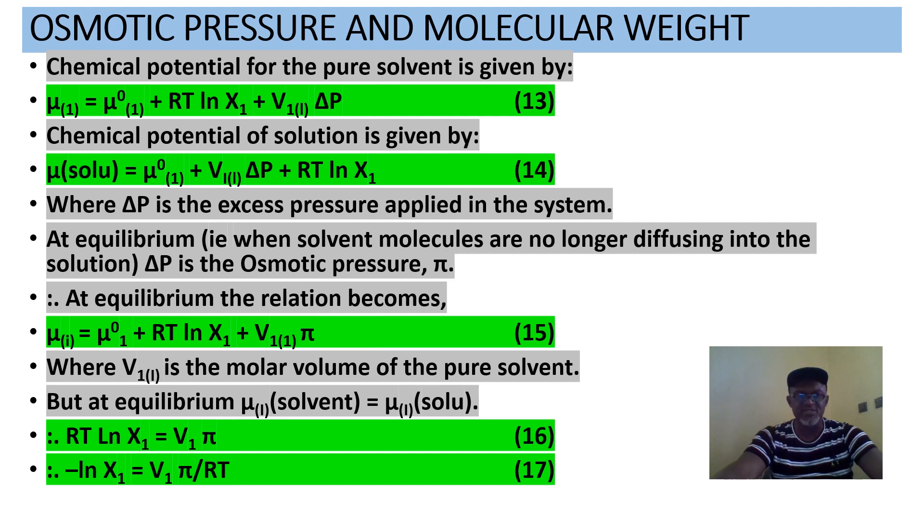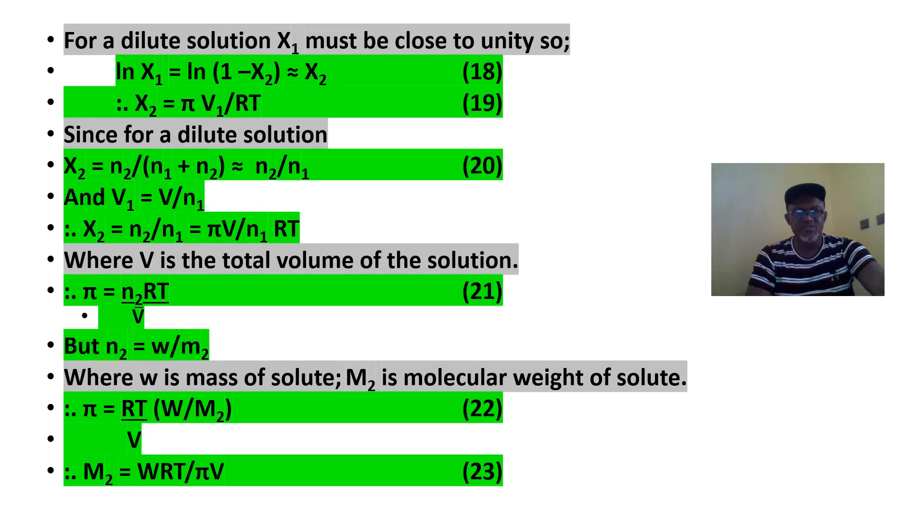Osmotic pressure and molecular weight. We will derive the equation again, equations 13 and 14 in terms of chemical potential. And when we equate and solve, we will get equation 17. Now for dilute solution, x1 must be close to unity. So we can now find our x2, and x2 is equal to n2 divided by n1 plus n2, which is approximately n2 over n1 for dilute solutions.